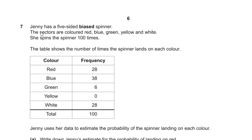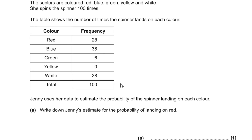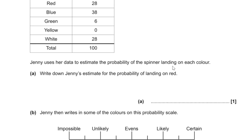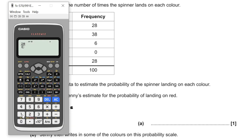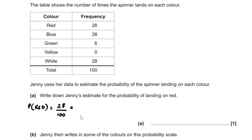Question 7. Jenny spins a 5-sided biased spinner 100 times. For part A, we write down Jenny's estimate for the probability of landing on red. She gets red 28 times out of 100, so P(red) = 28/100 = 7/25.